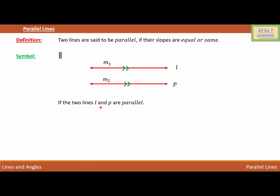So if two lines L and P are parallel, we write that line L is parallel to line P. This is the symbol we use, and we read it as 'line L is parallel to line P.' Instead of writing the whole statement, we can use this symbol to say that two lines L and P are parallel. Then their slopes are equal — that is, M1 is equal to M2, where M1 is the slope of line L and M2 is the slope of line P. This is how we define parallel lines.